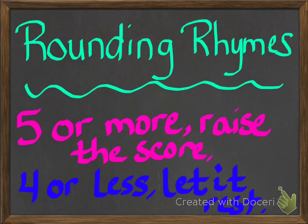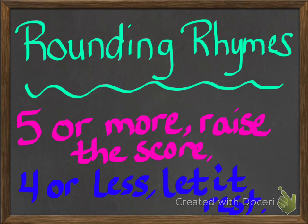Now we're going to move into the rounding part. You've probably learned different types of rounding rhymes or sayings to help you remember what to do when you round. One of the more popular ones is: "five or more, raise a score; four or less, let it rest." Another version says "four or less, leave the mess," where you basically leave everything alone and move on to your next number.